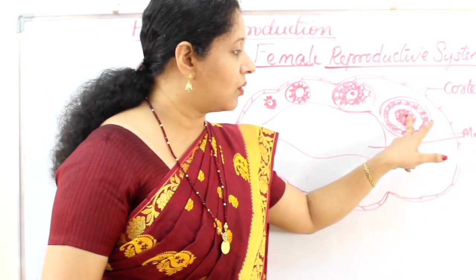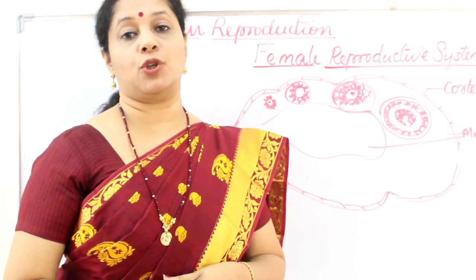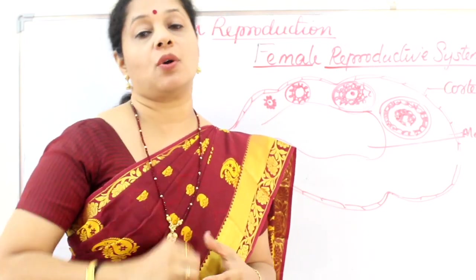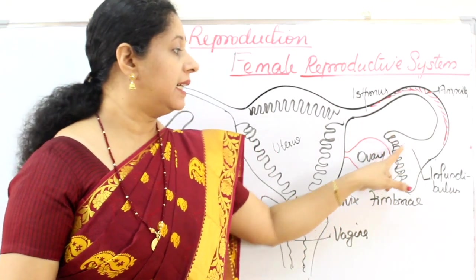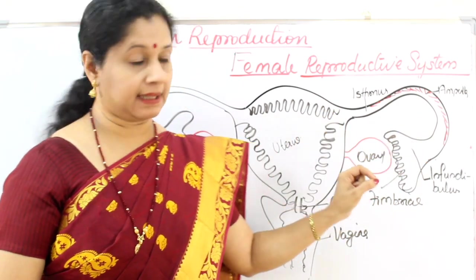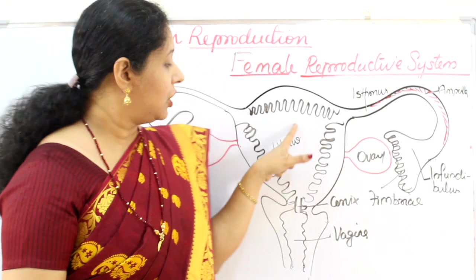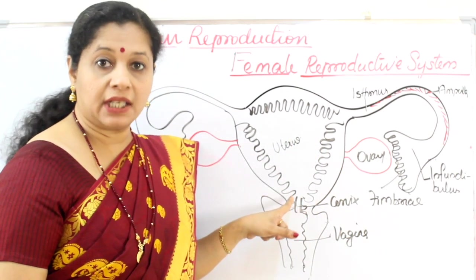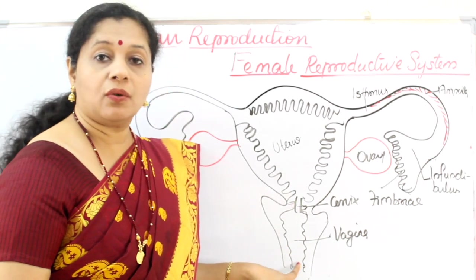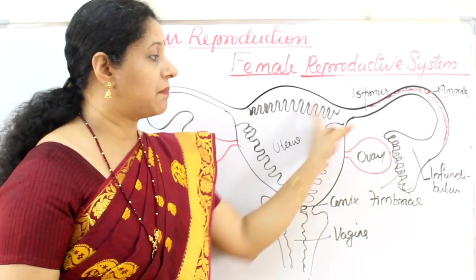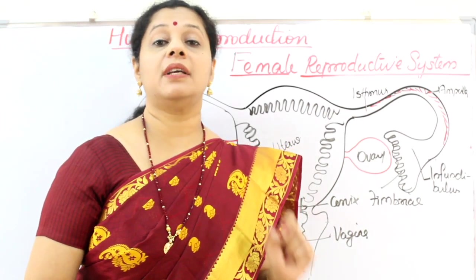Once the ovum is released from the Graafian follicle, it is captured by the fallopian tube adjacent to the ovary. The ovum is collected by the fallopian tube, also called the oviduct, which is 10 to 12 cm in length. It joins into the uterus, an inverted pear-shaped structure. The uterus opens through the cervix, which leads into a canal called the vagina, opening out through the vaginal orifice. The fallopian tube, uterus, cervix, and vagina together serve as the duct system of the female reproductive system.